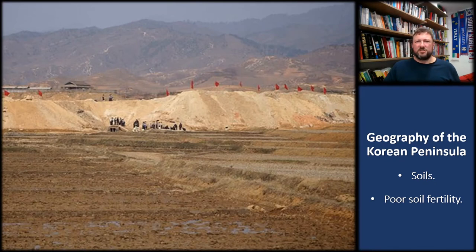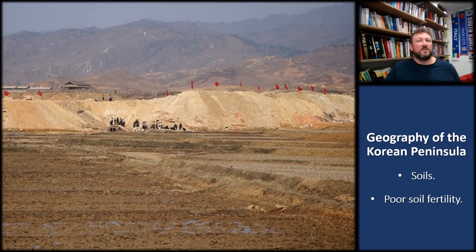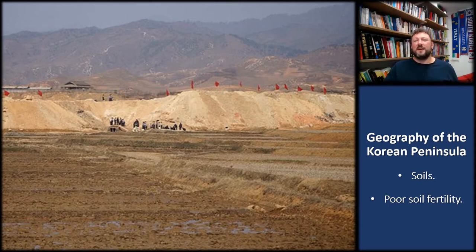Soils are an important landscape feature too. The Korean peninsula generally has poor natural soil fertility, and particularly so in the north. This puts a ceiling on agricultural productivity and highlights the need for external inputs of fertiliser to increase crop yields. This is part of the food insecurity problem, and it's even more pronounced in the DPRK due to its lower proportion of farmland. The farmland that does exist has poor soil quality, and that's part of the reason why North Korea became so dependent on fertiliser inputs from the Communist bloc during the Cold War.